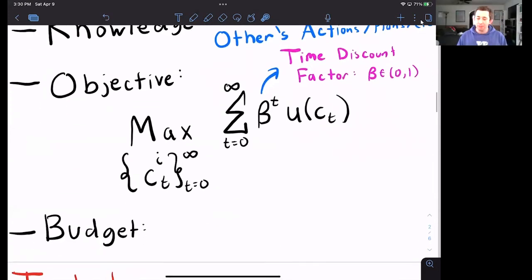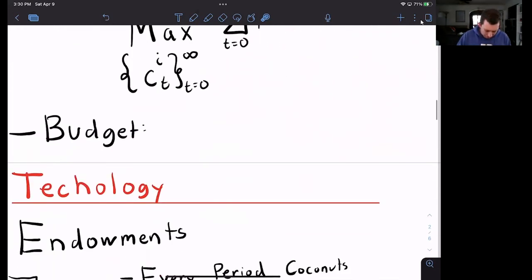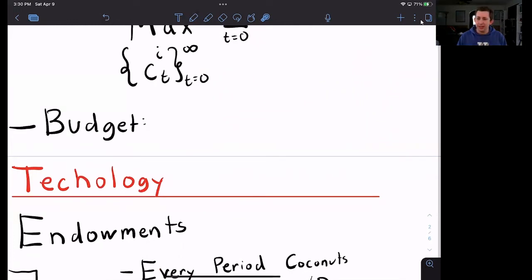We are going to get back to the budget, but first let's talk about how this Arrow-Debreu world works, because I think it'll make the budget constraint make more sense. How does the Arrow-Debreu world work? What is the technology in this model?